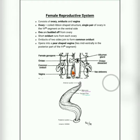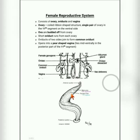The vagina lies in the mid-ventral part of the 11th segment. The male genital pore is found in the 10th segment and the female genital pore in the 11th segment. Since leech is a hermaphrodite, both male and female reproductive systems are found in the same organism.